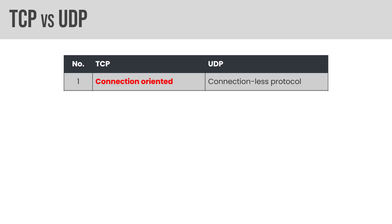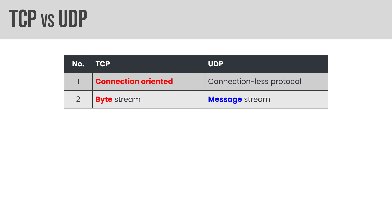TCP versus UDP — this is layer four, the transport layer. TCP is connection-oriented, where UDP is connection-less. TCP functions on a byte stream, which allows for retransmission if there are problems. UDP is a message stream happening at a different level. There are some conversations where getting every byte from source to destination properly ordered is very important, and other situations — such as video streaming — where there's no point in trying to retransmit.